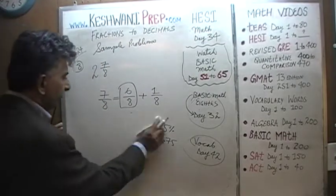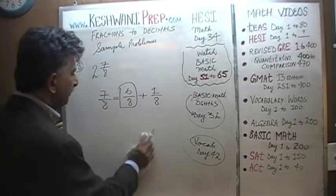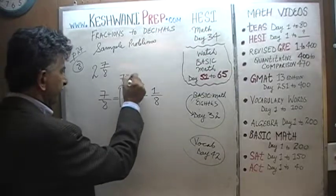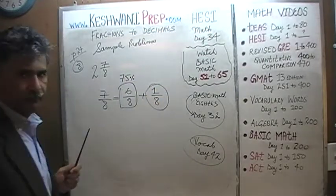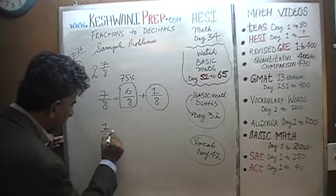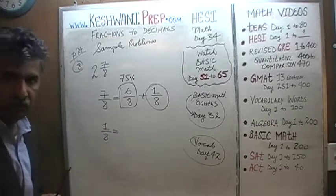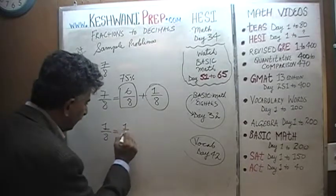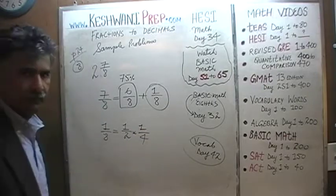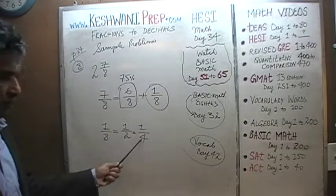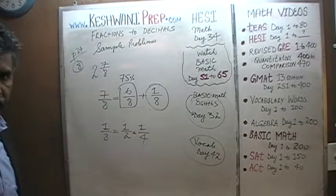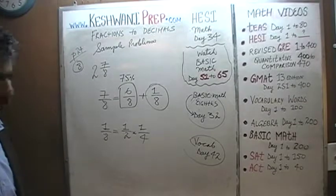That was the easy part — 6/8 is 75%. What about 1/8? Well, 1/8 is nothing more than half of a quarter. If you have a quarter and take half of that, you end up with 1/8, which makes perfect sense. There's a circle — you break it up into quarters, and if you take half of a quarter, that slice is one eighth.